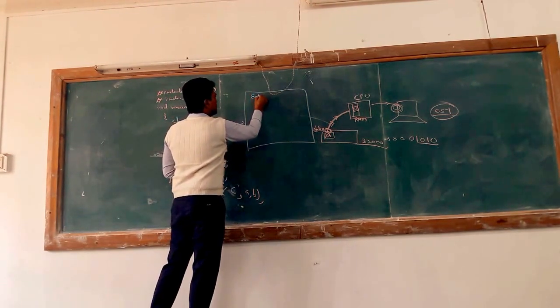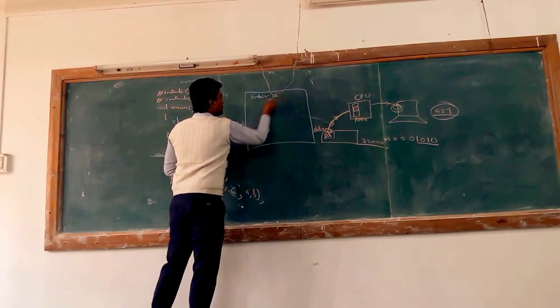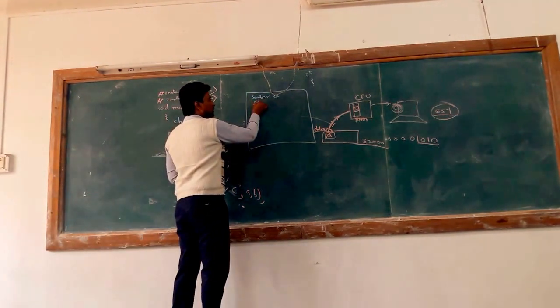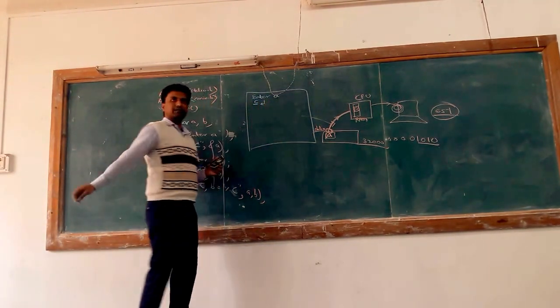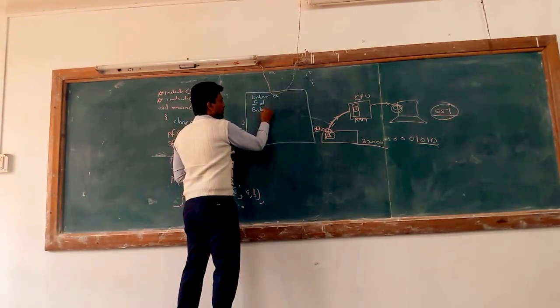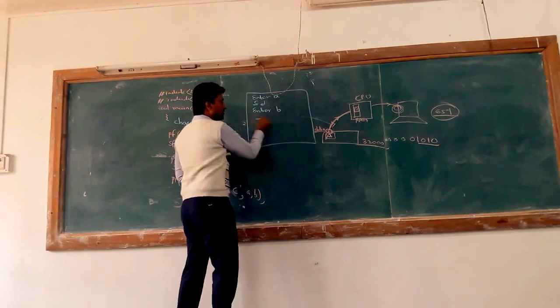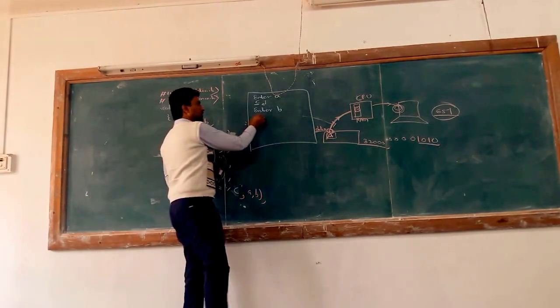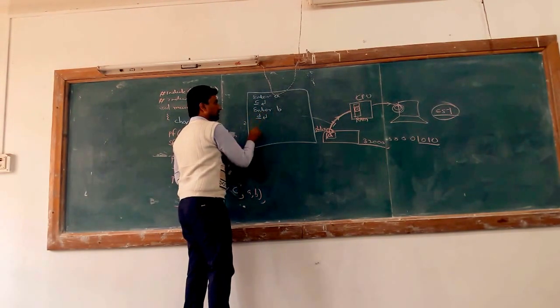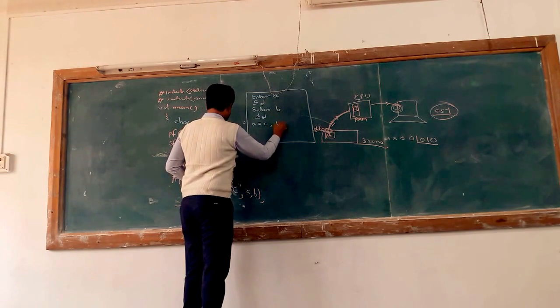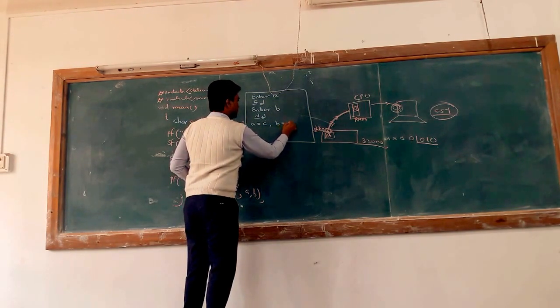First, enter A cursor blinks for the character. Suppose you press C and press enter key. So again what happens? Enter B cursor blinks for second character. Suppose you enter D as a second character, then what is the output? A is equal to C, B is equal to D.